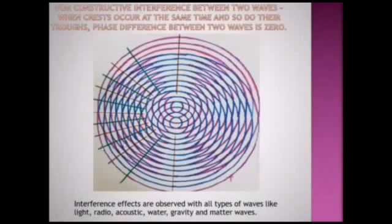This shows interference pattern, bright and dark fringes. Interference effects are observed with all types of waves like light, radio, acoustic, water, gravity, and matter waves.